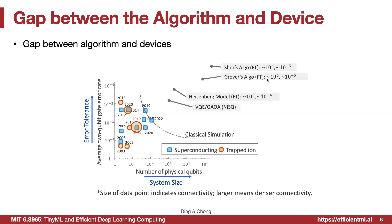On a timeline of recent devices, blue squares represent superconducting devices and orange circles represent trapped-ion technologies. The qubit count has grown significantly, but algorithms like Shor's factoring algorithm require around 10⁶ qubits, and Grover's database search algorithm also needs far more qubits than we currently have.